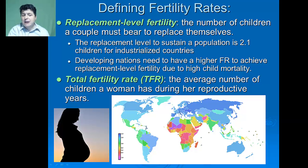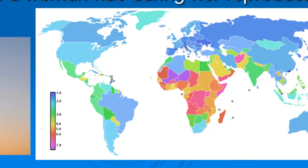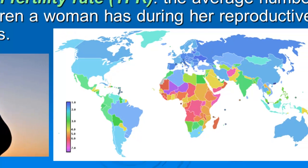Developing nations need to have a higher fertility rate to achieve replacement level due to high child mortality. The second type is the total fertility rate, which is the average number of children a woman has during her reproductive years. In countries of Africa and certain parts of Asia, they have a very high total fertility rate, which will play a big role in determining population size.